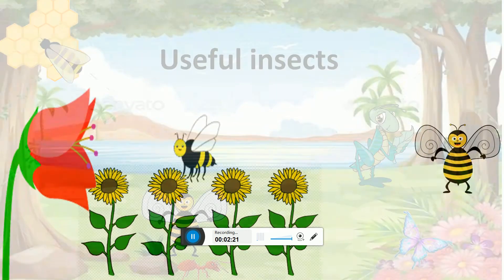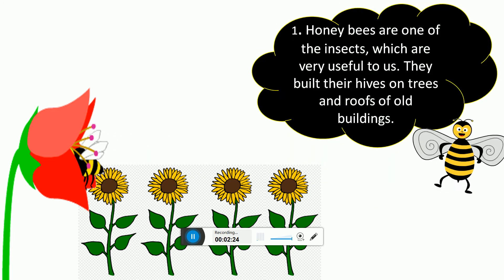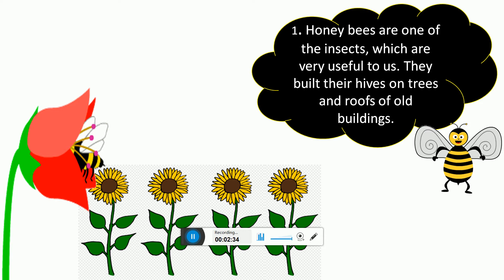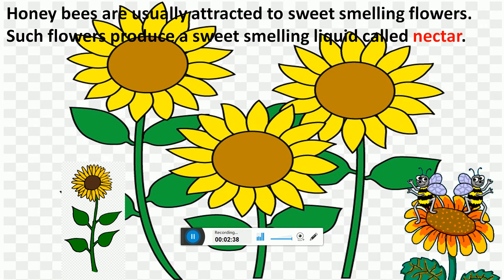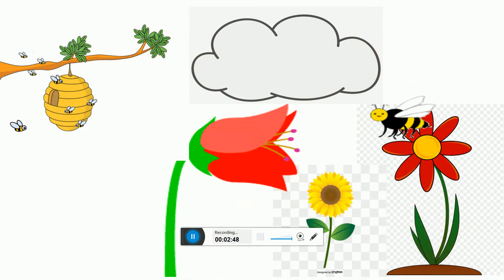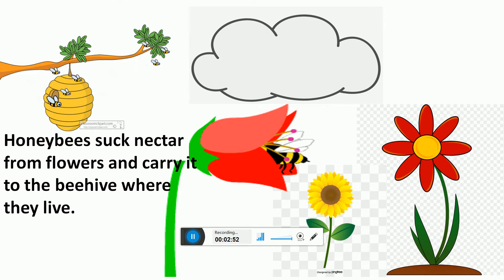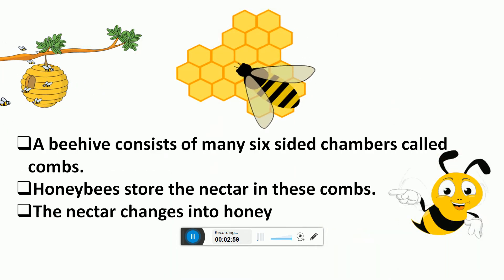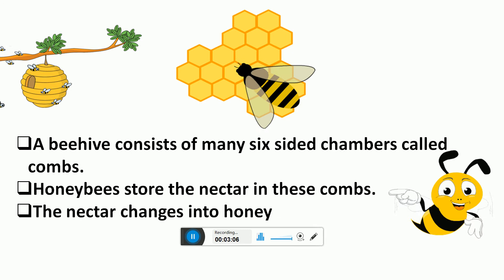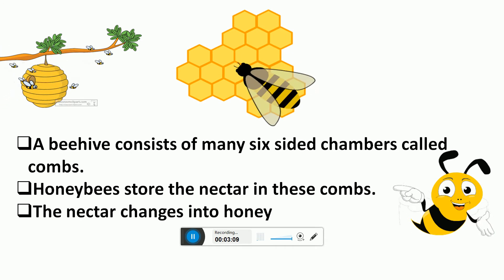Useful insects: Honey bees are one of the insects which are very useful to us. They build their hives on trees and roofs of old buildings. Honey bees are usually attracted to sweet-smelling flowers. Such flowers produce a sweet-smelling liquid called nectar. Honey bees suck nectar from flowers and carry it to the beehive where they live. A beehive consists of many six-sided chambers called combs. Honey bees store the nectar in these combs. The nectar changes into honey.